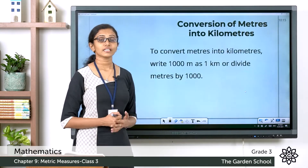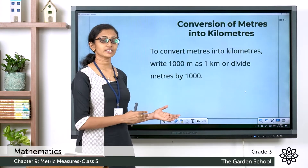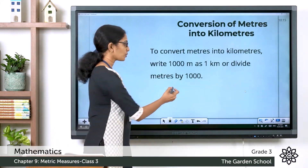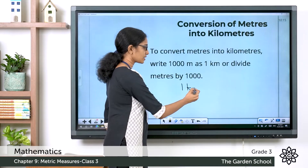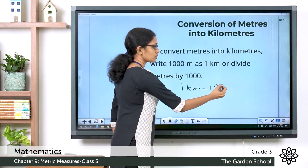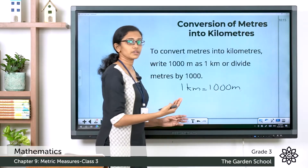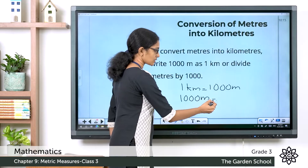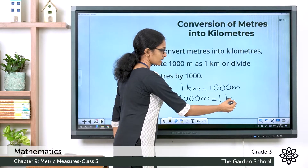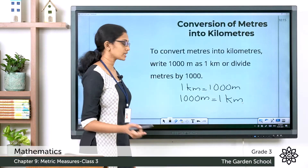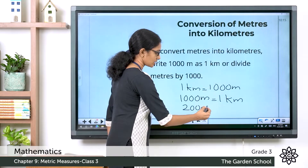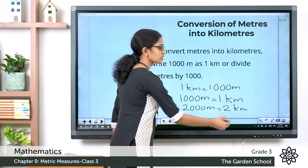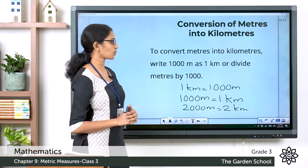Now let's see how we can convert from meters into kilometers. We know 1 kilometer is equal to 1000 meters, which we can rewrite as 1000 meters equals 1 kilometer. So 2000 meters would equal 2 kilometers, and 3000 meters would equal 3 kilometers, and so on.